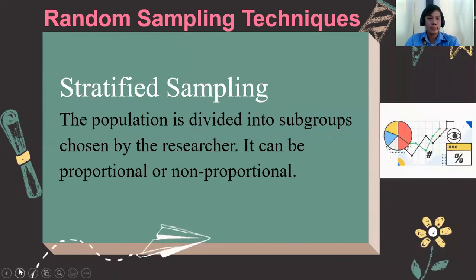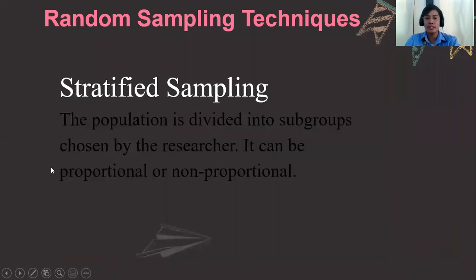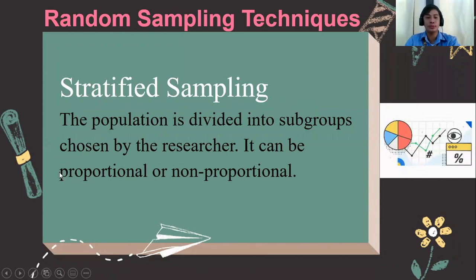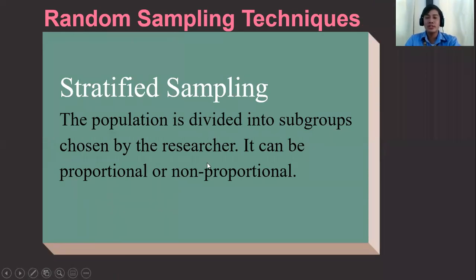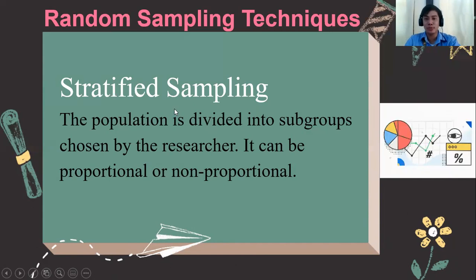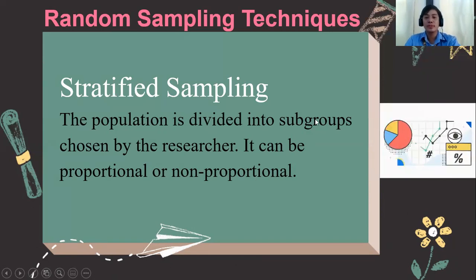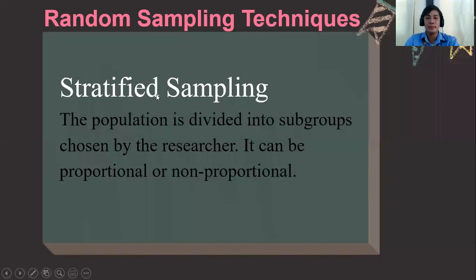The third type is stratified sampling. These subgroups are called strata — singular: stratum. The population is divided into subgroups chosen by the researcher, and it can be proportional or non-proportional stratified sampling. For example, if your population are senior high school students, your population can be divided into subgroups. The strata could be the ABM, GAS, STEM, TVL, and so on — all the strands and tracks offered in senior high school are considered your strata.